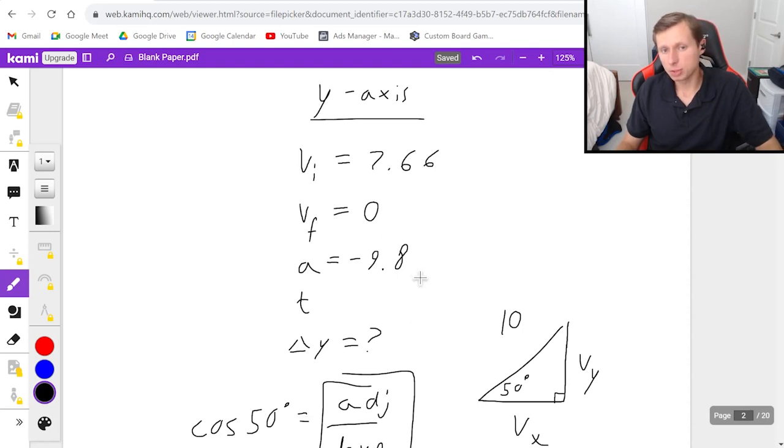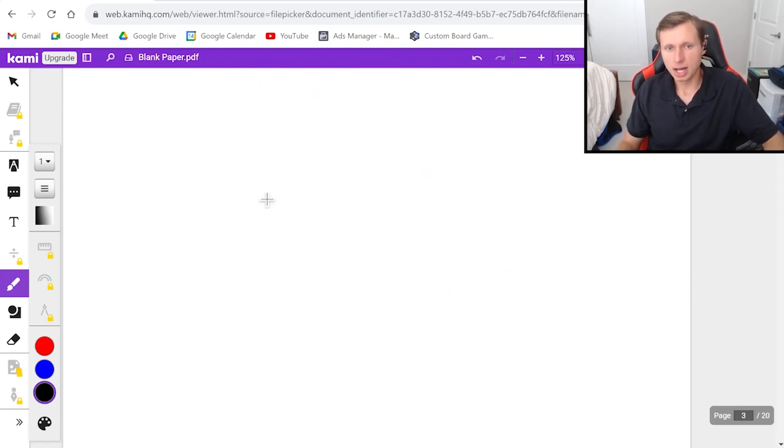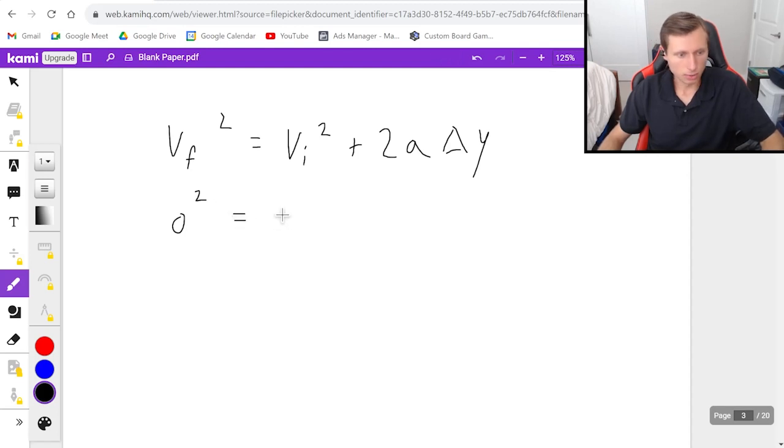So notice I have three of the five, which means I can plug into one of my kinematic variables, and it's going to be the one that doesn't have time in it, which means I'm using this equation. V final squared equals v initial squared plus 2a delta x, in this case delta y. And now I can just plug in the variables I know and start solving for delta y. V final is going to be zero squared equals 7.66 squared plus 2 times a is negative 9.8 times delta y.